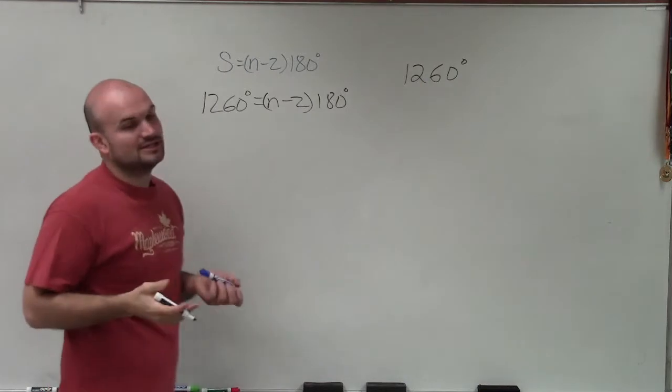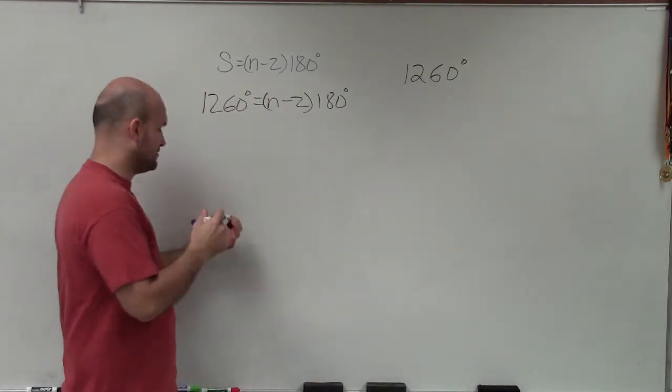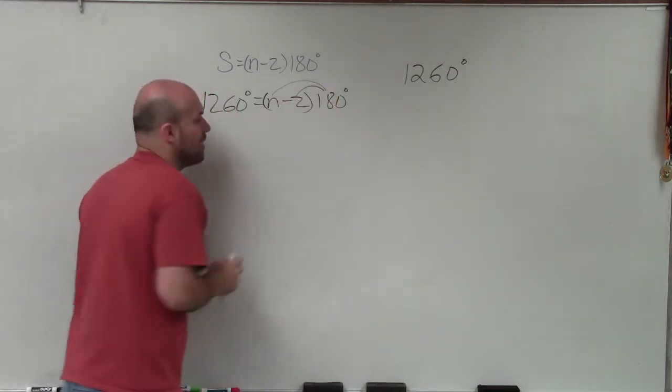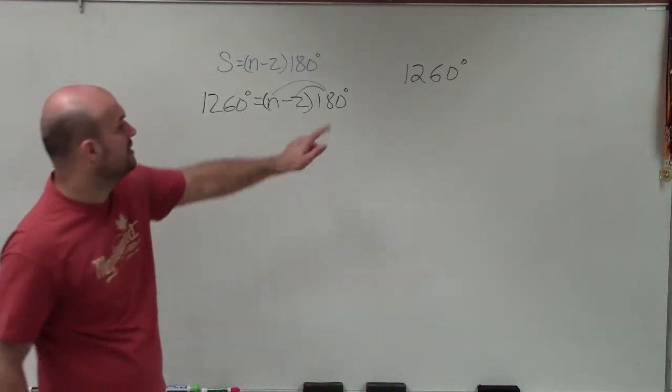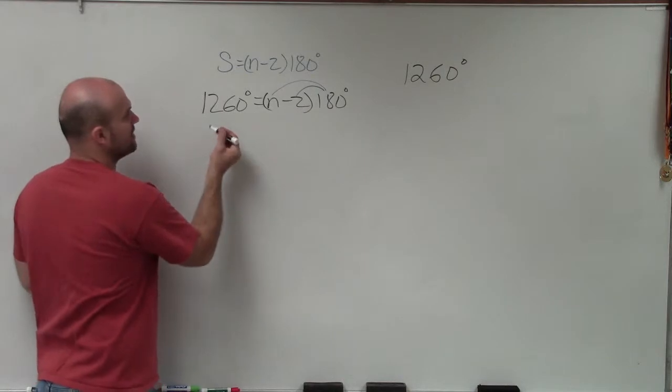Now, again, what we would need to do is we need to solve for n. So to solve for n, we got to get the n outside those parentheses. And to get them outside those parentheses, we need to apply the operation of why we have those parentheses. And the operation why we have those parentheses is multiplication. So I'm going to apply the distributive property to simplify the right side of the equation.